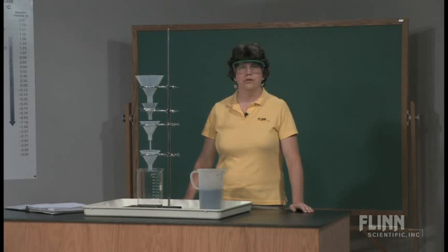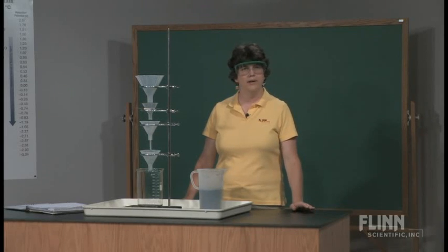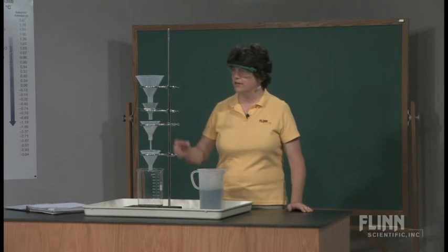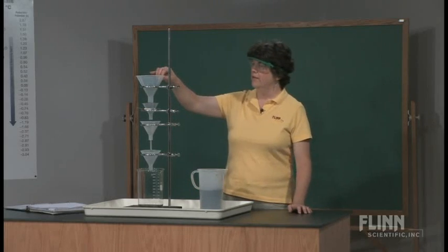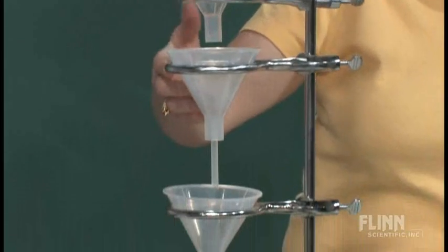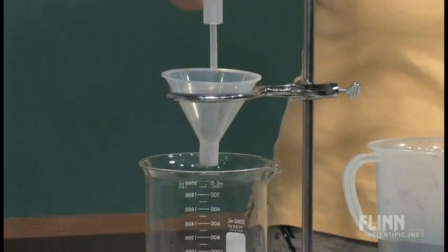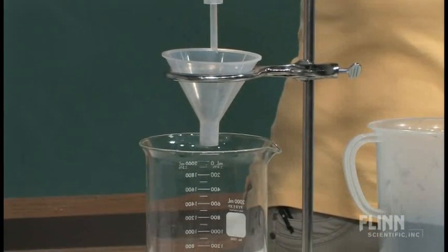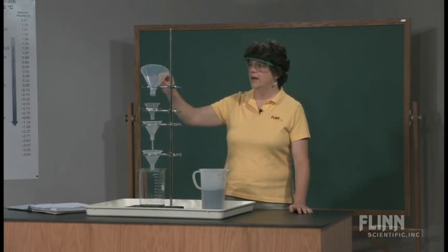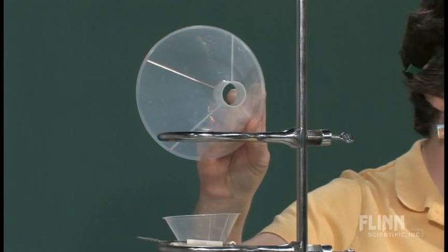This is one way I can show students how a rate-limiting step works. Take a series of funnels. The funnels I've got on a ring stand, I just happen to have four funnels here. You can have as many or as few. Well, you have to have at least three. Four is a good number.